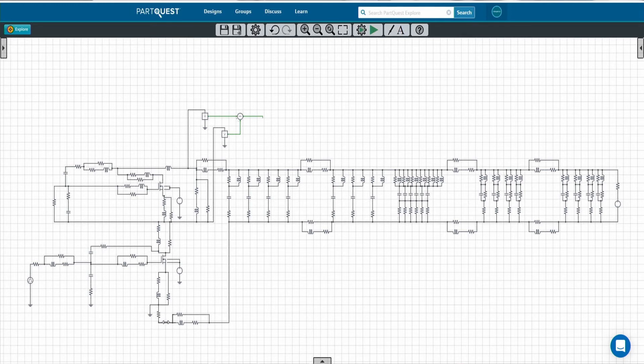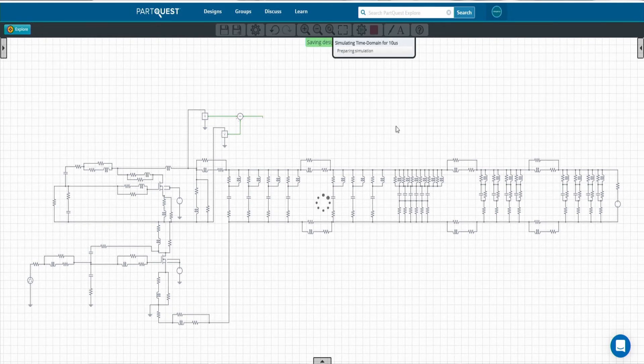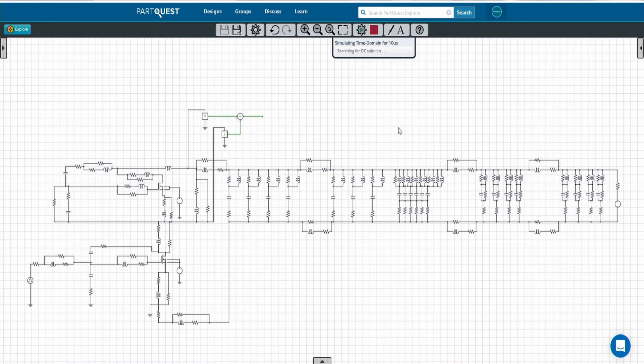What we can now do is simulate this design and probe the signals that we just looked at in the measurements. Therefore it will be the high side VDS of this MOSFET and the current through the MOSFET.